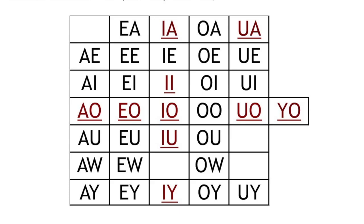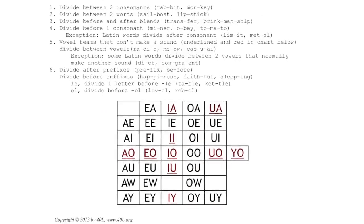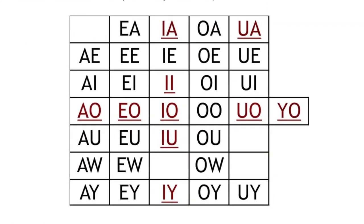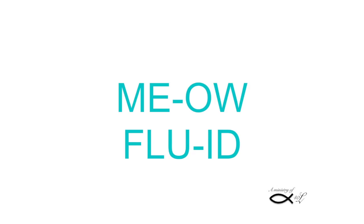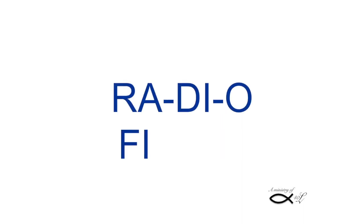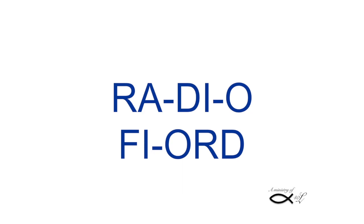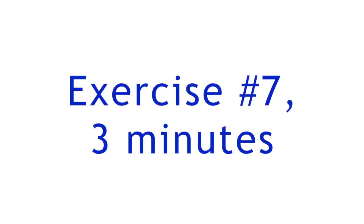Vowel teams that don't make a sound on their own divide between vowels. Also, some Latin words divide between two vowels that normally make another sound. Since the divided vowel syllables end in a vowel, they'll have their long vowel sound, as in 'meow' or 'fluid.' Except for the vowel I, which can either have its long I sound or its romance language sound of long E — 'radio' (long I), 'fjord' (long E). Number seven — see you back in three minutes.